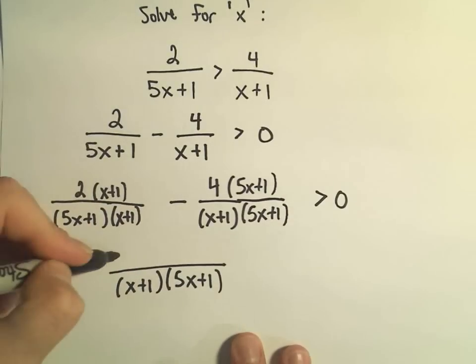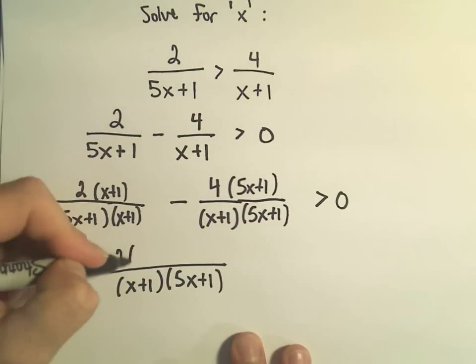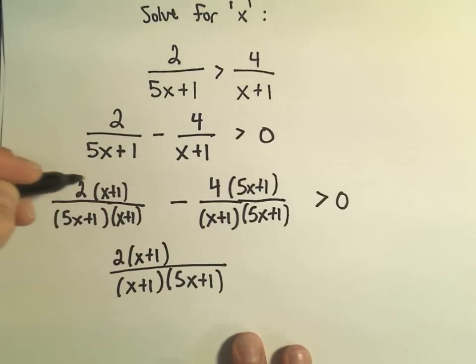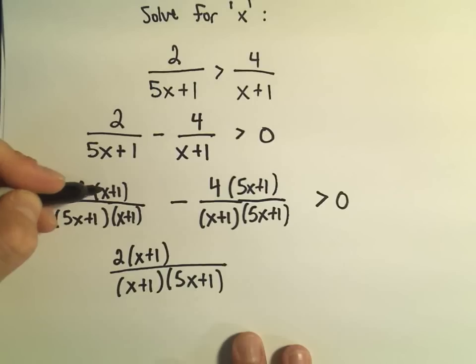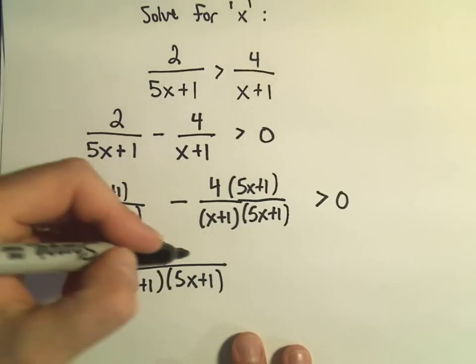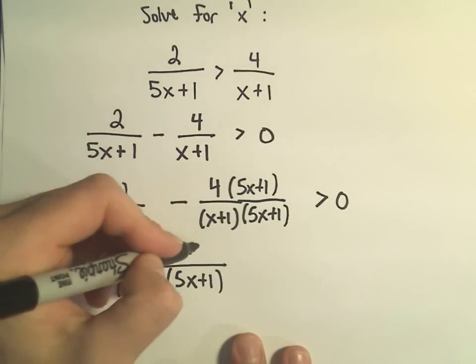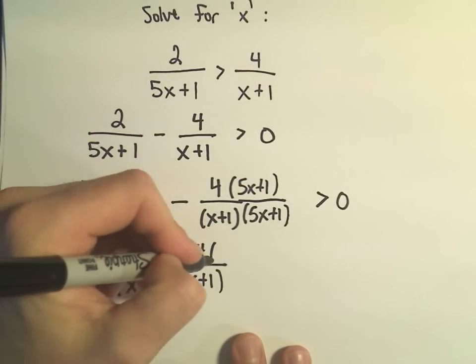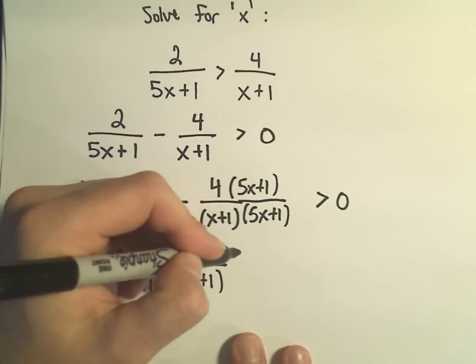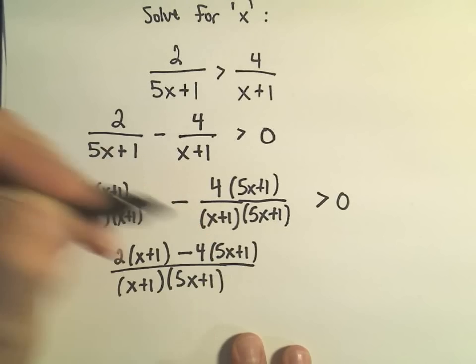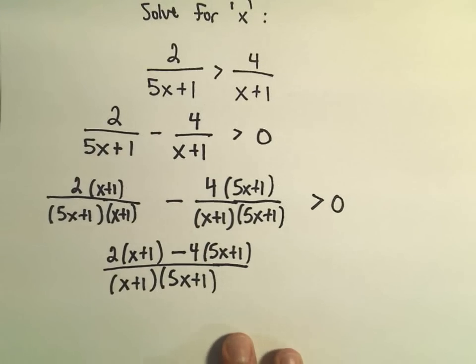When you simplify fractions, all the arithmetic occurs in the numerator. So we have 2 times the quantity x plus 1, minus 4 times the quantity 5x plus 1, greater than 0.